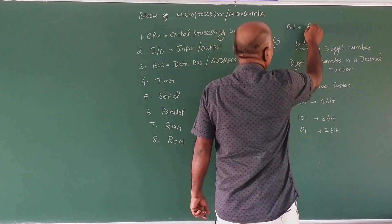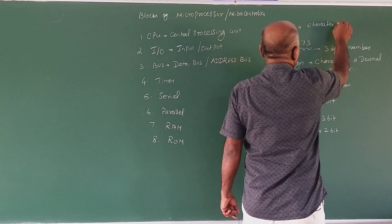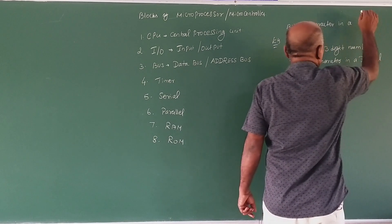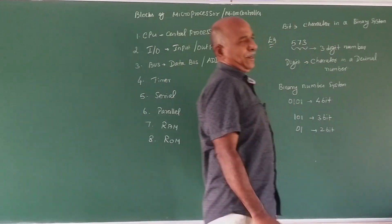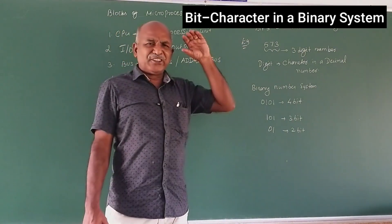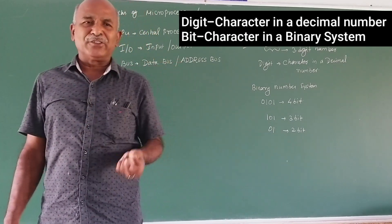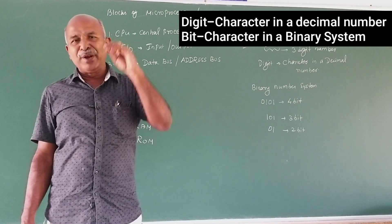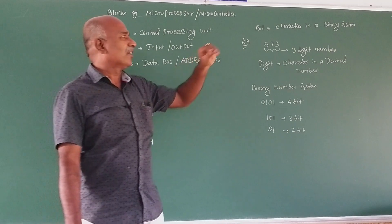A bit is nothing but a character in a binary system. In the binary number system, one character is called a bit. So, what is a digit and what is a bit? That's why BIT stands for a binary number character — one character is called a bit.